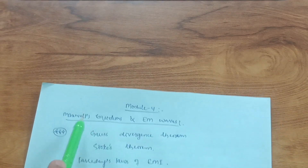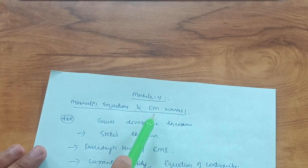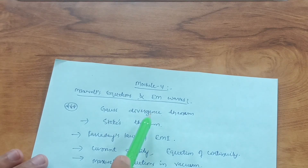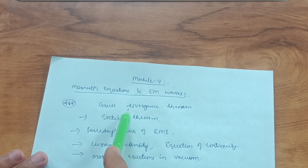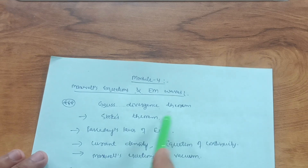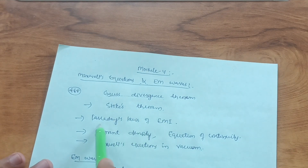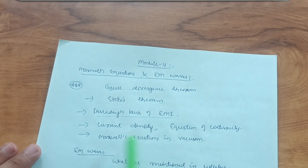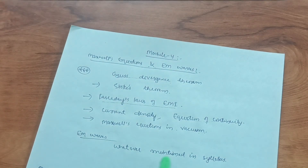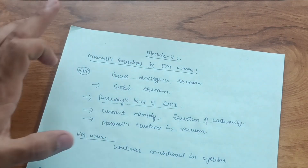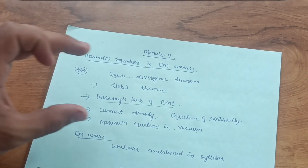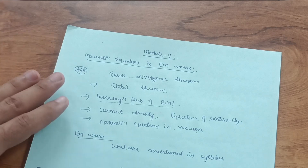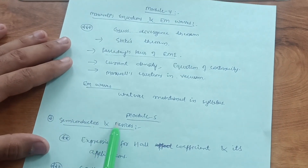Module 4 covers Maxwell's equations and EM waves — a tougher topic compared to other modules. If you're comfortable with vector operations like divergence and curl, it will be easier. The important questions are Gauss's divergence theorem, Stokes' theorem, Faraday's law of electromagnetic induction, current density, equation of continuity, and Maxwell's equations in vacuum. For EM waves, refer to the model question paper. You can get 10 to 12 marks from this module.